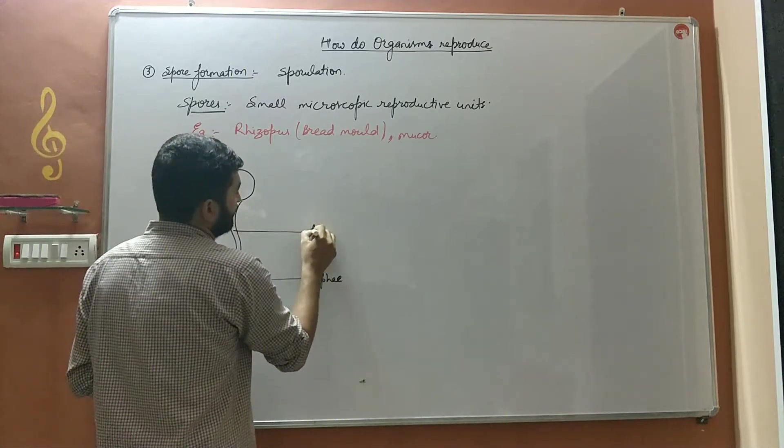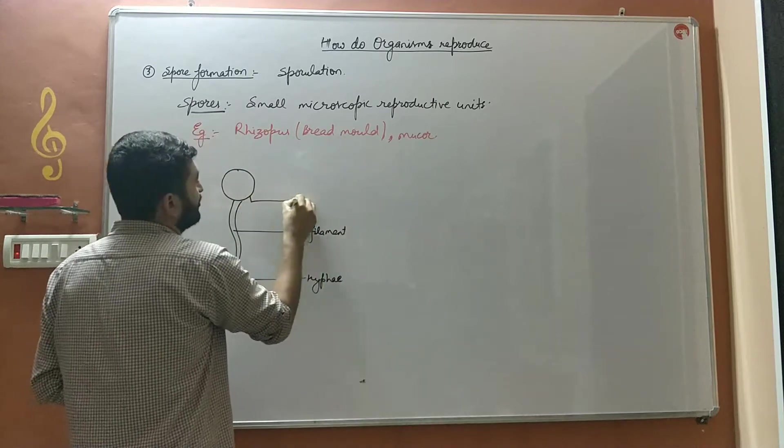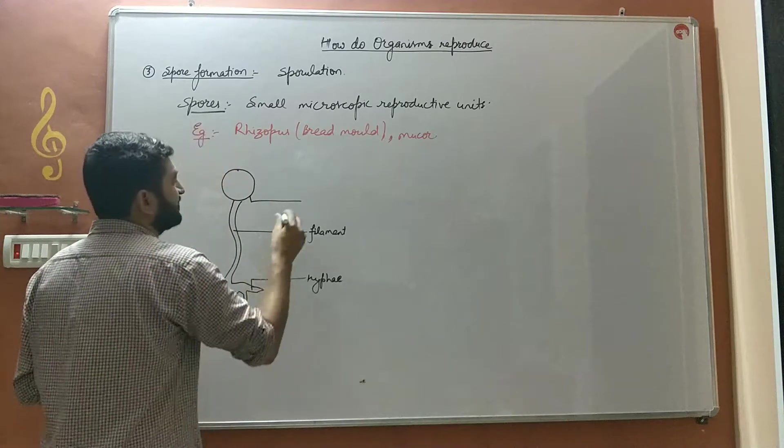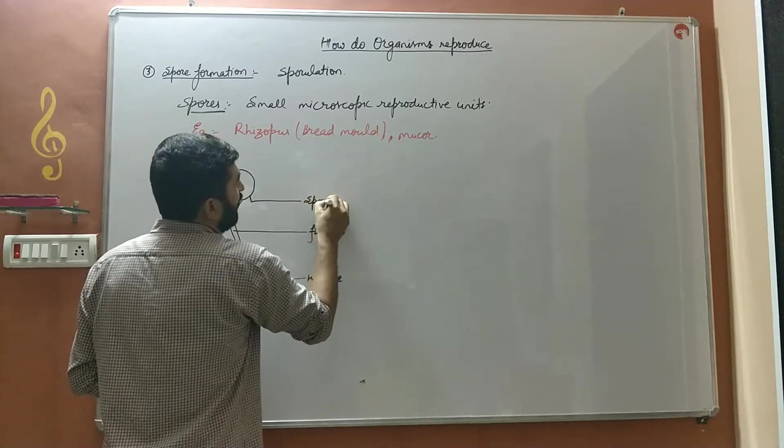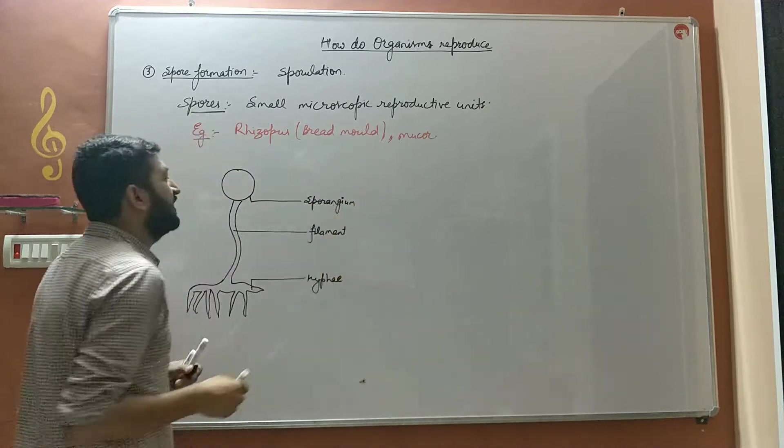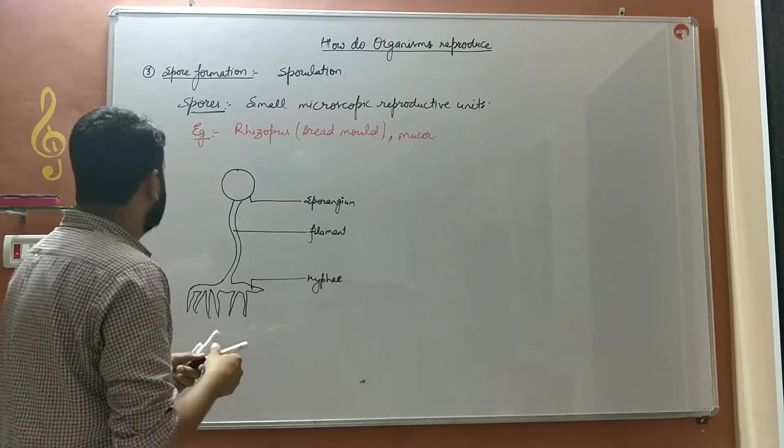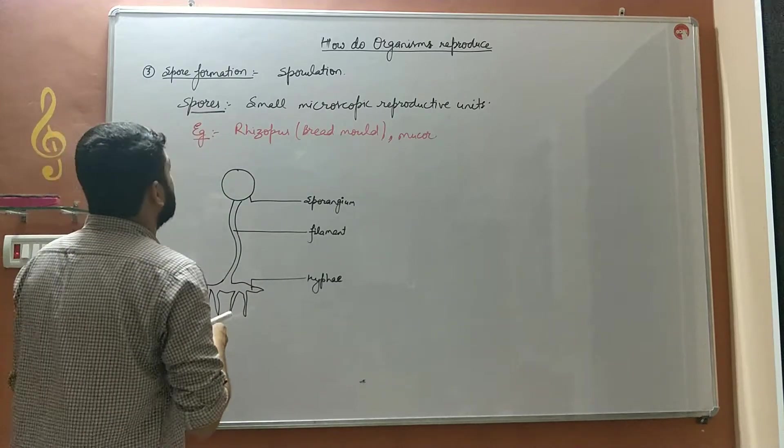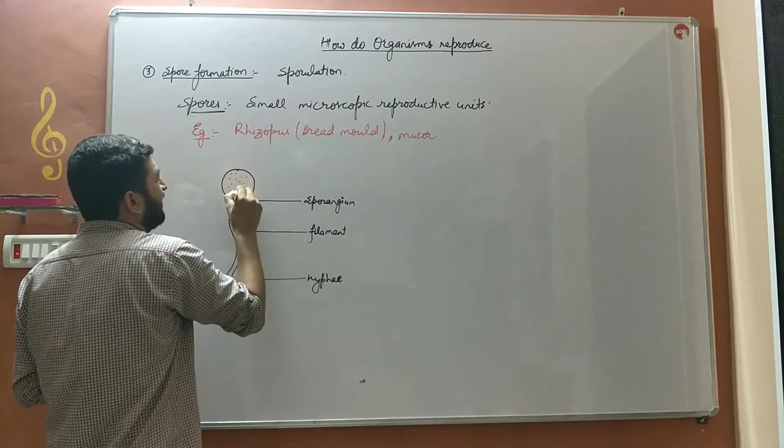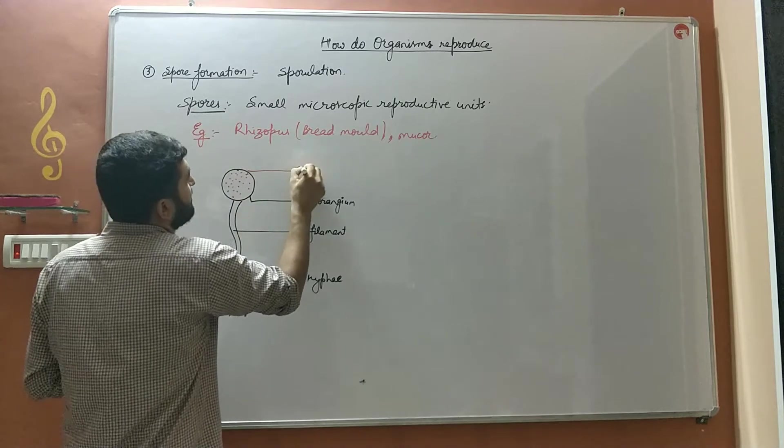This stick-like structure, stalk-like structure known as filament, has a blob over it. This blob-like structure is known as sporangium. There are multiple in number and the plural of sporangium is sporangia. These sporangia or sporangium contain small dark color, tiny reproductive units and those are known as spores.